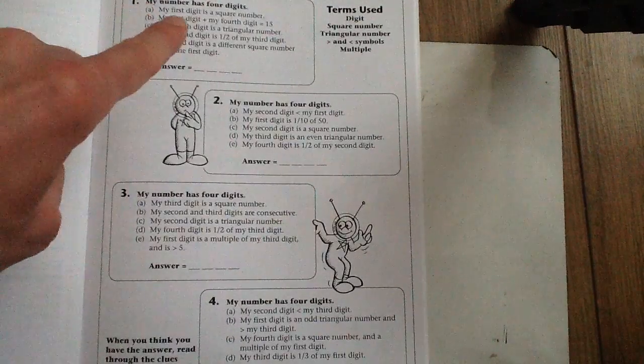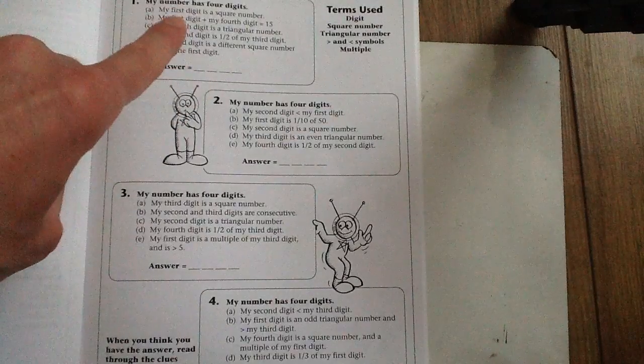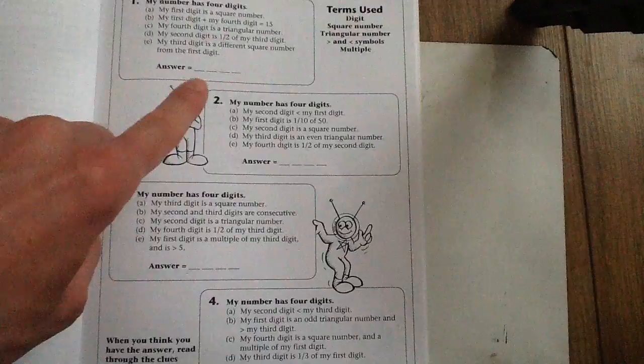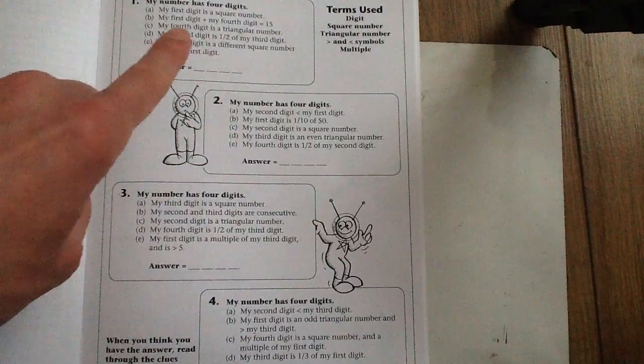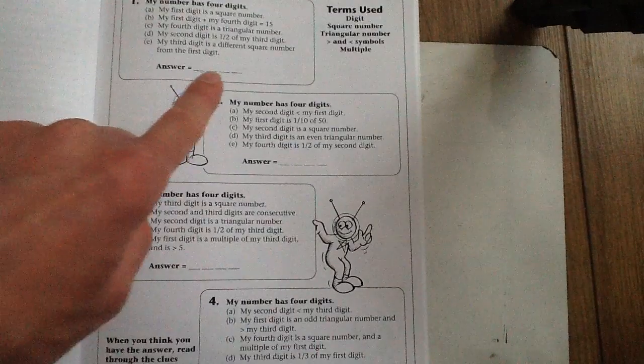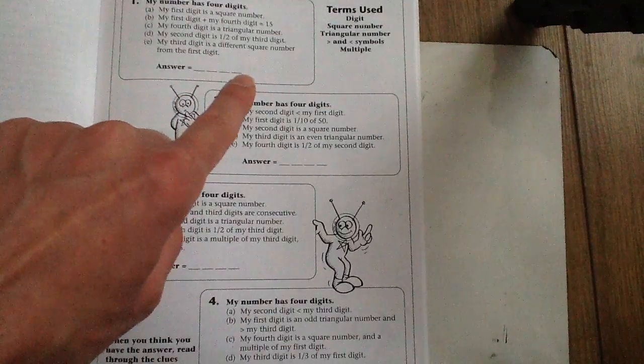So first of all, it says here for the first number, my first digit is a square number. It has to have four digits. My first digit plus my fourth digit, so the first digit plus the fourth digit equal a total of 15.